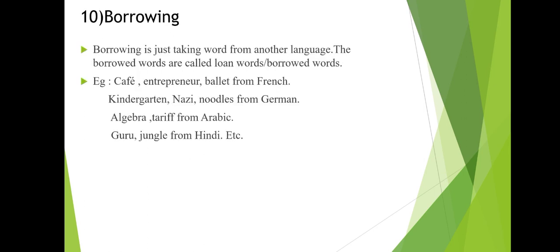The next process is borrowing. Borrowing is simply taking words from another language; the borrowed words are called loanwords. For example, 'café', 'entrepreneur', and 'beret' are borrowed from French. From Arabic, we have 'algebra' and 'tariff'. From India, we have 'guru' and 'jungle'. This process of taking words from other languages is called borrowing.